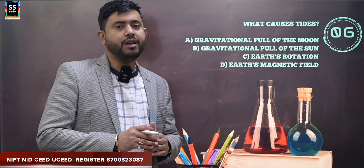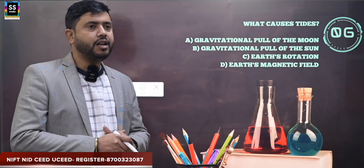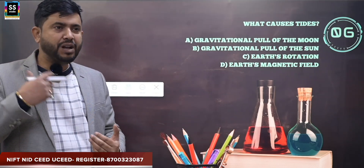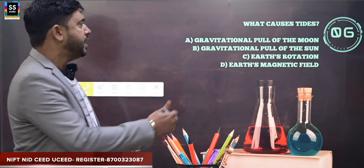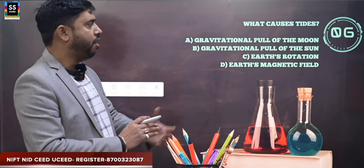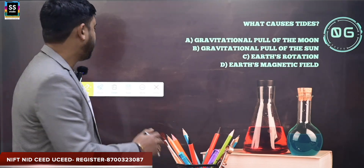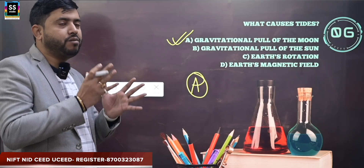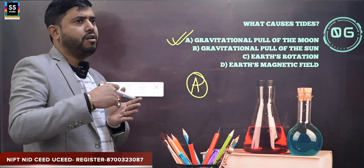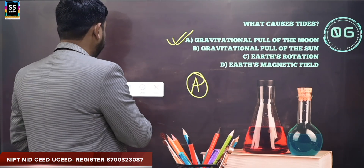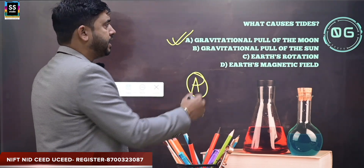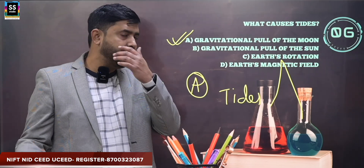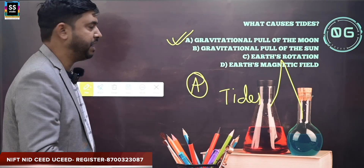What causes tides? If you've studied high tide and low tide in class 9 or 10, you'll know the real cause. The options are: gravitational pull of the moon, gravitational pull of the sun, Earth's rotation, or Earth's magnetic field. The correct answer is the gravitational pull of the moon, which causes high tides and low tides in the sea. On a full moon day, tides are always high, which is why fishermen are advised not to go into the deep sea.